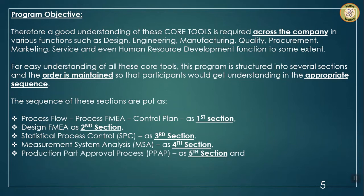Production part approval process is kept as the fifth section because this section combines all the documents — process flow, process FMEA, control plan, design FMEA, SPC, measurement system analysis, and more — along with sample parts to be submitted during PPAP. This is the final submission document to the customer for providing the first production lot manufactured at the production site. It is kept fifth so that once all previous sections are understood, it will be very easy to follow the production part approval process.